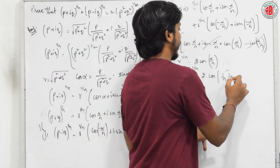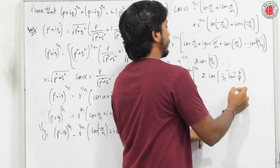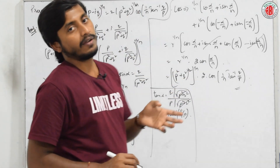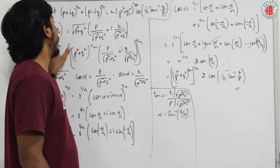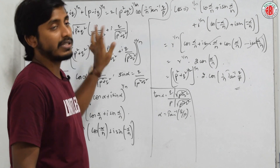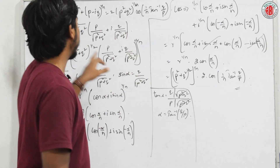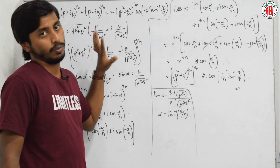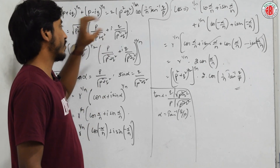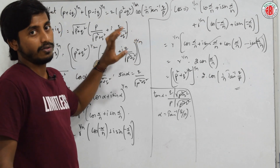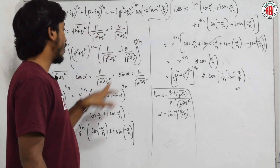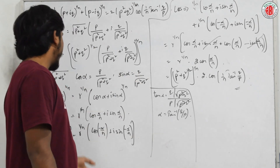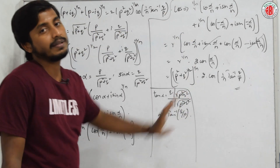Substituting, we write cos(1/n · tan⁻¹(q/p)), which is exactly what was asked to prove. The key steps are: convert the rectangular form to modulus-amplitude form by multiplying and dividing by √(p² + q²), equate to cos α and sin α, apply De Moivre's formula, add the two terms, and substitute.